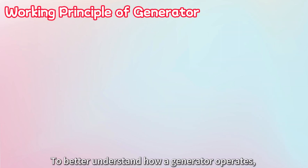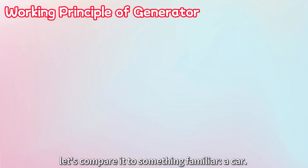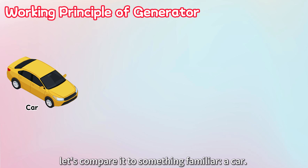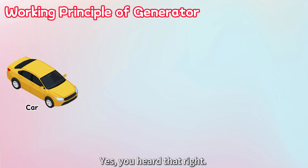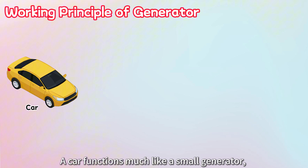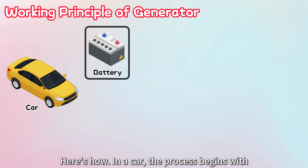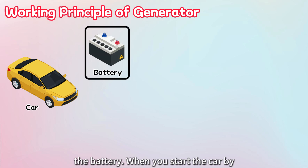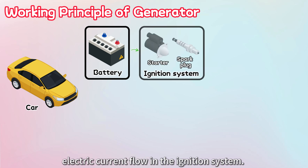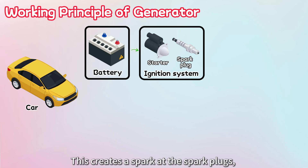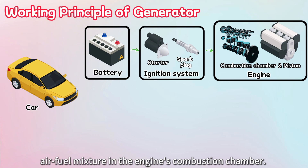To better understand how a generator operates, let's compare it to something familiar — a car. A car functions much like a small generator, self-sustaining the electrical systems within it. In a car, the process begins with the battery. When you start the car by turning the key, the battery directs an electric current flow in the ignition system. This creates a spark at the spark plugs, which is hot enough to ignite the air-fuel mixture in the engine's combustion chamber.